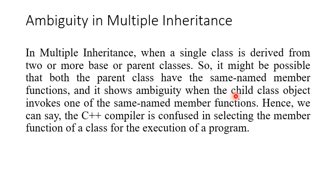When a child class object invokes one of the same-named member functions, the C++ compiler is confused in selecting the member function for execution of a program. We can understand this problem using a simple diagram.